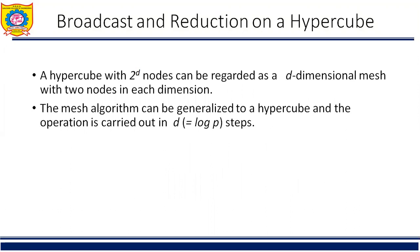Now another example: broadcast and reduction on hypercube. As shown in the previous section, one-to-all broadcast is performed in two phases on a two-dimensional mesh with communication taking place along a different dimension in each phase. Similarly, the process is carried out in three phases on a three-dimensional mesh. A hypercube with 2 raised to d nodes can be regarded as a d-dimensional mesh with two nodes in each dimension.